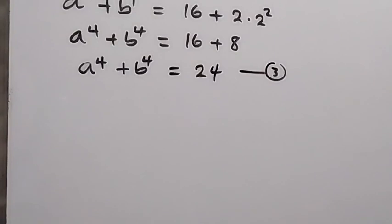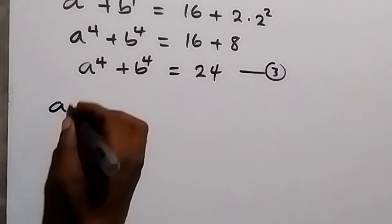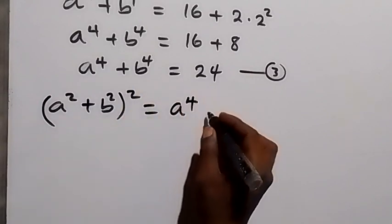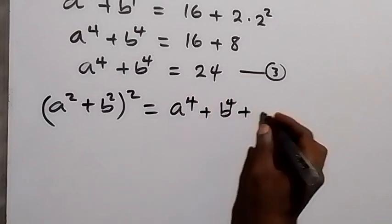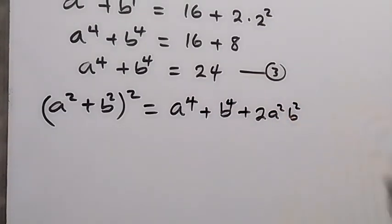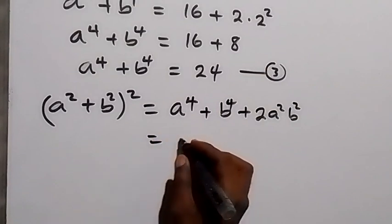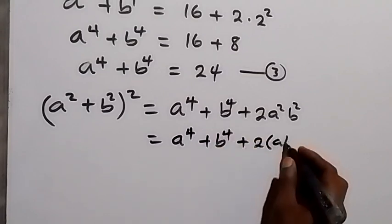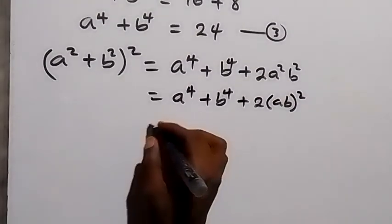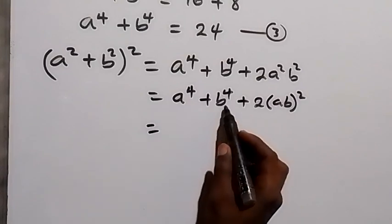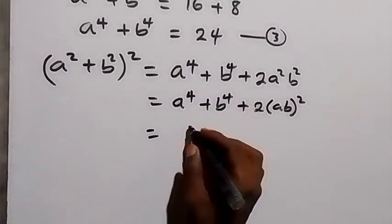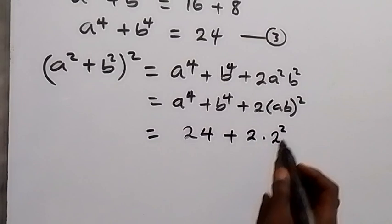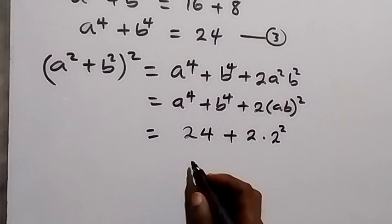In the next step, from the identity, let's expand a squared plus b squared, all squared. This gives us a raised to power 4 plus b raised to power 4 plus 2a²b², which we can also write as a⁴ plus b⁴ plus 2 into bracket ab squared. We have a⁴ plus b⁴ equals 24 from equation 3. So this will be 24 plus 2 times ab, where ab is 2, so 2 squared is 4, and 4 times 2 is 8. We add 8 to 24 and that gives us 32.